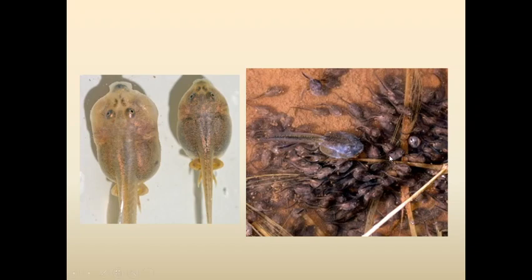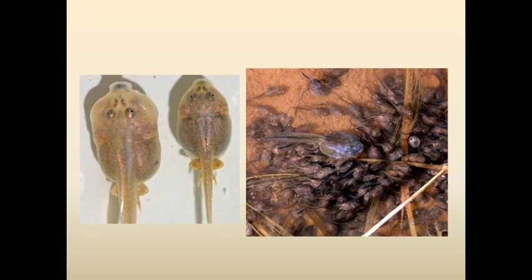Even individual species will change. This is a group of Mexican spadefoot tadpoles — they're actually all siblings, born at the same time. But there's some genetic stuff that switches on and off that makes some tadpoles into really carnivorous animals with different mouth morphology — basically different shape in their anatomy. They get really big, they're predatory, and they eat their brothers and sisters. So even within the same species at the same time, different individuals will be eating different things.